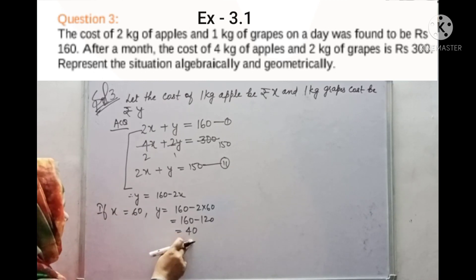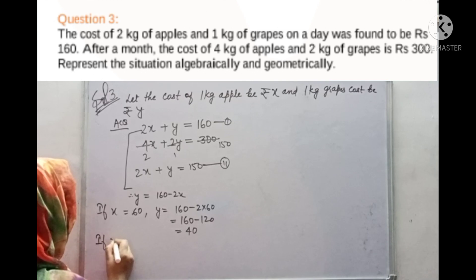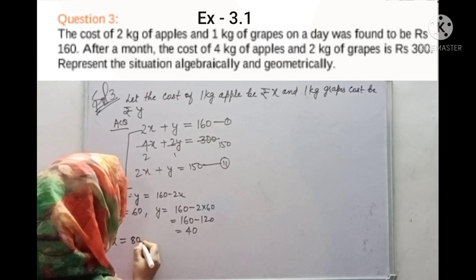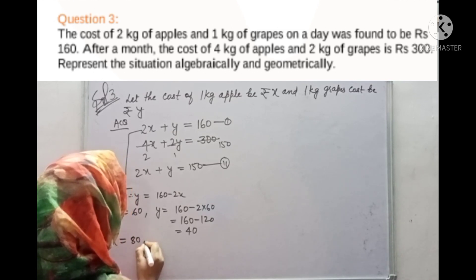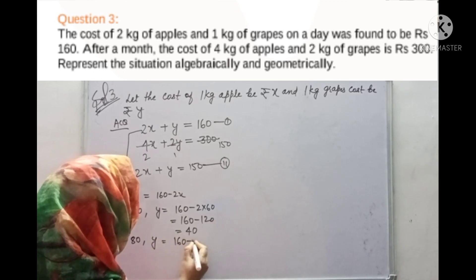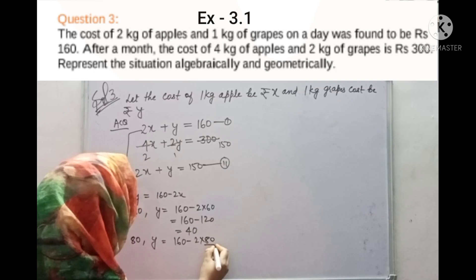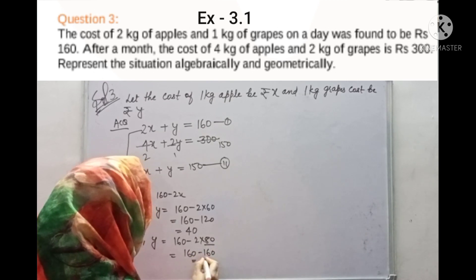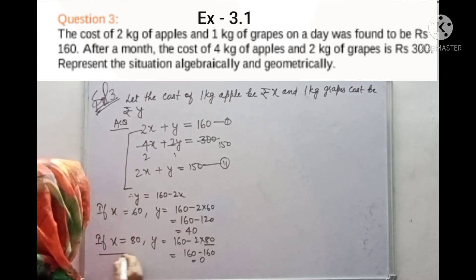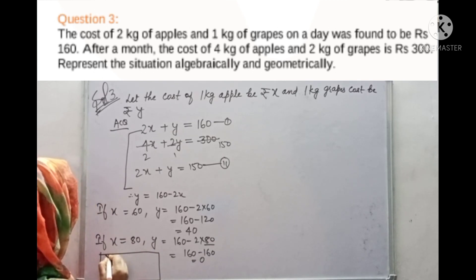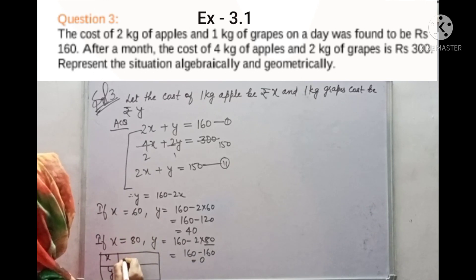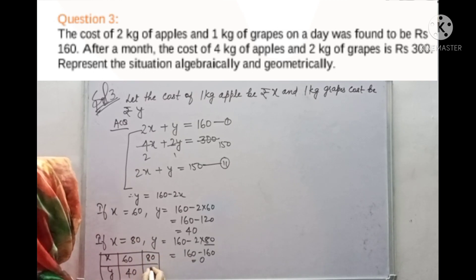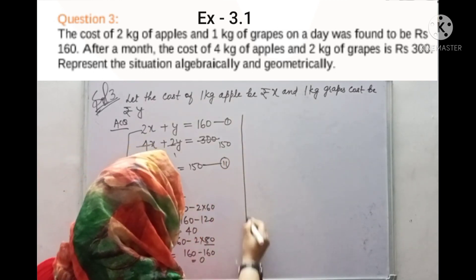If x = 80, then y = 160 − 160 = 0. Now we draw a table with X and Y values. If x = 60, y = 40. If x = 80, y = 0. Now we will solve the second equation.